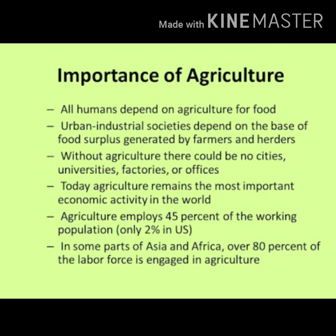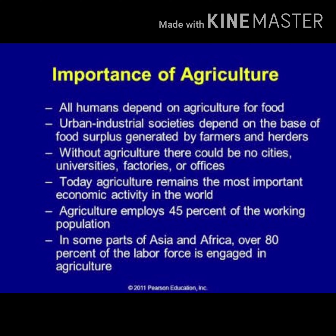Agriculture is the main source of raw material to major industries such as cotton textile, jute, sugar, and edible and non-edible oils. Many industries like food processing also get their raw materials from agriculture. Bulk of agricultural products are transported by railways and roadways from farms to factories.